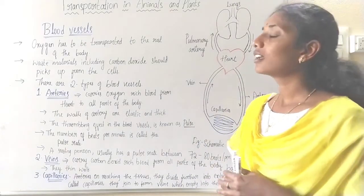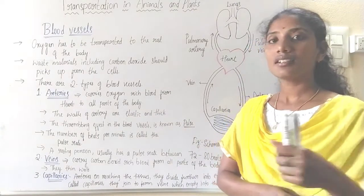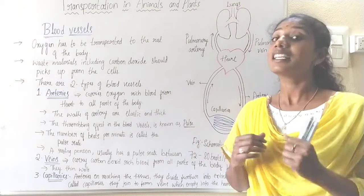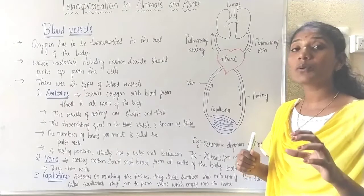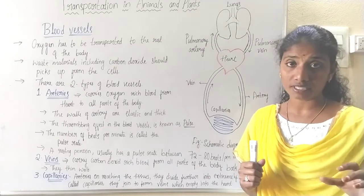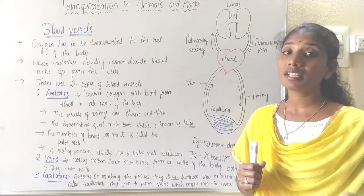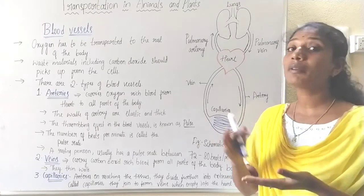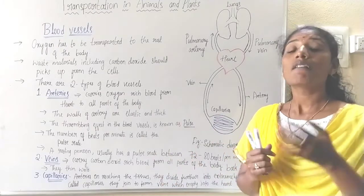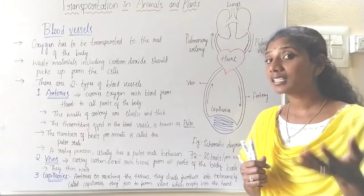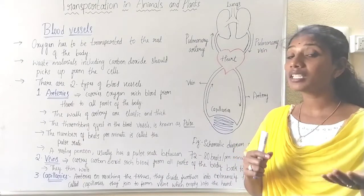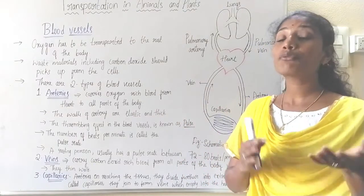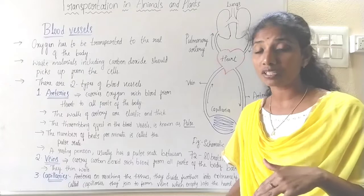The oxygen we inhale from fresh air should be transported to different parts of the body. As we understood in chapter 10, oxygen is very much essential for the breakdown of food. So when oxygen plays such an important role, that means each and every cell requires oxygen. This oxygen should be transported from the lungs to different parts of the body.